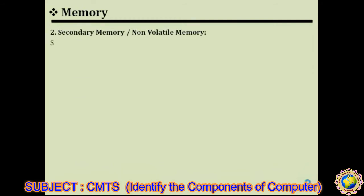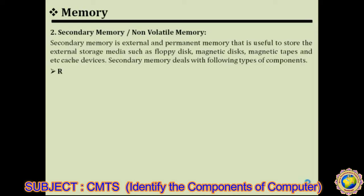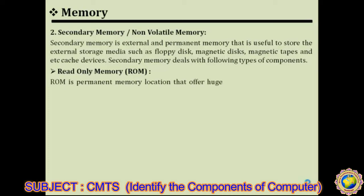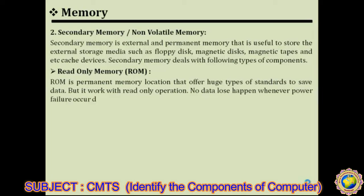Secondary memory is external and permanent memory, useful for storing data on external storage media such as magnetic disks, magnetic tapes, and flash devices. Secondary memory or non-volatile memory is permanent storage. First, ROM — Read Only Memory — is a permanent memory location that offers standard storage to save data but works with read-only operation. No data loss happens when a power failure occurs during ROM operation. ROM means Read Only Memory, and its concept is write once, read many.